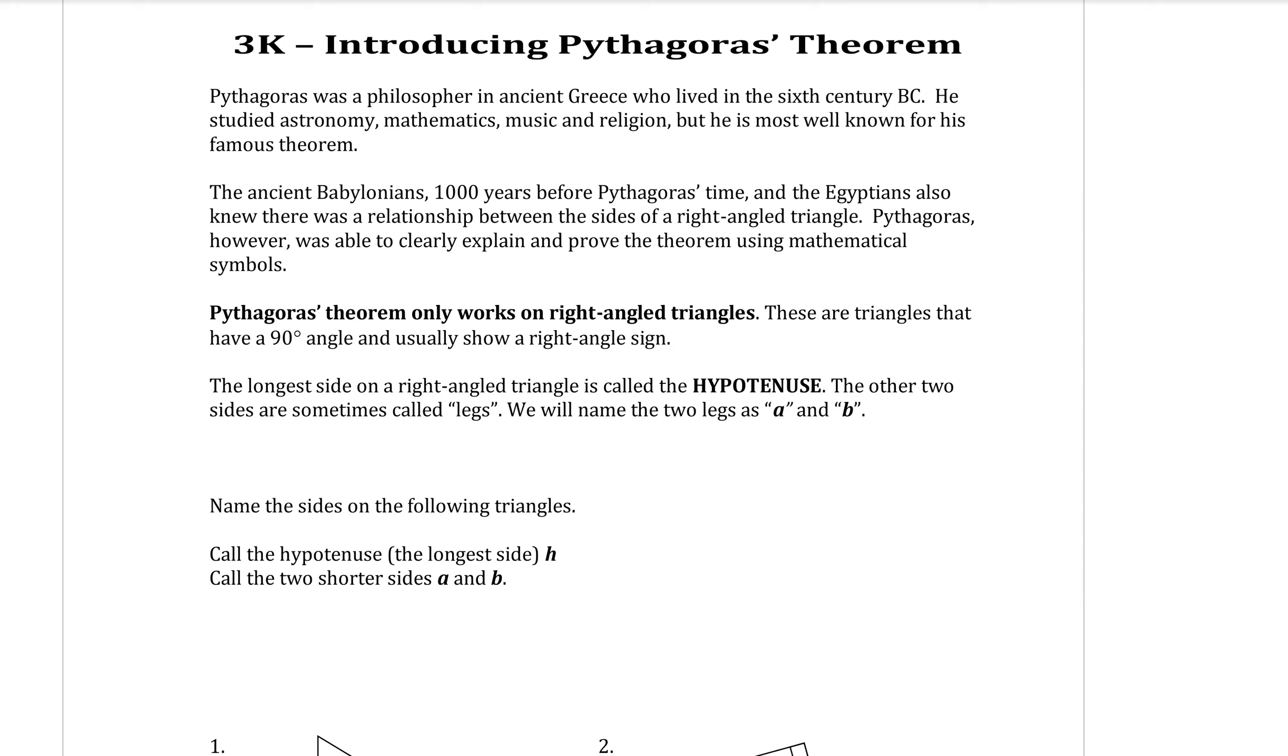The ancient Babylonians, a thousand years before Pythagoras' time, and the Egyptians also knew that there was a relationship between the sides of a right-angled triangle. Pythagoras, however, was able to clearly explain and prove the theorem using mathematical symbols.